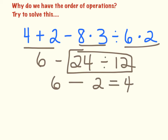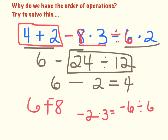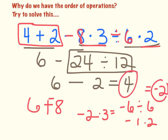Somebody else may do this differently — go straight across: 4 plus 2 is 6, then take away 8. So 6 take away 8 — I'll add the opposite — that's negative 2. Times that by 3 gives negative 6, divided by 6 is negative 1, times 2 is negative 2. So now I've got 4 and negative 2 as two different answers.